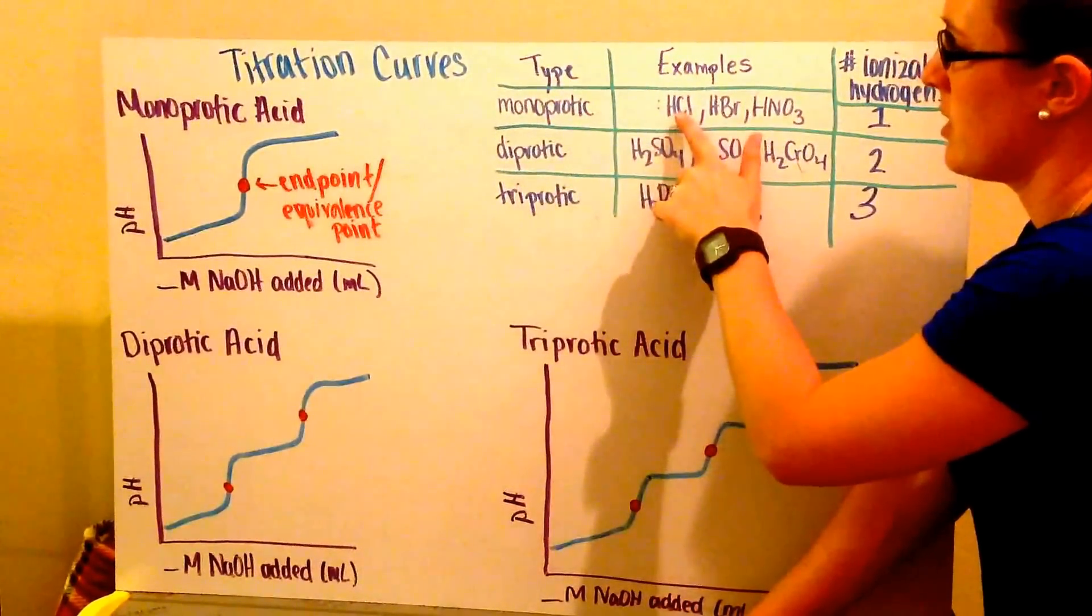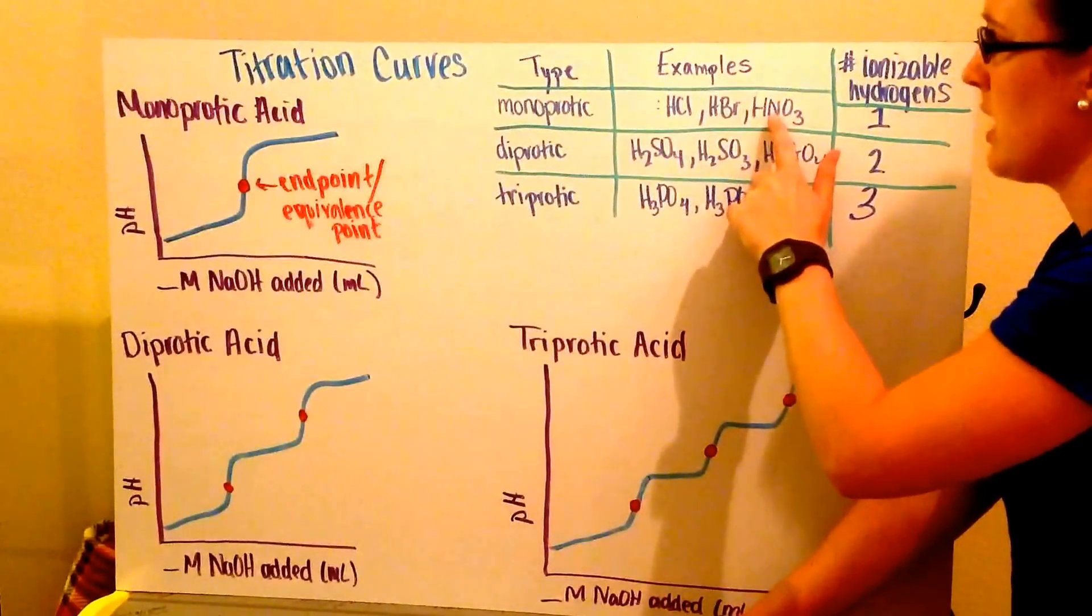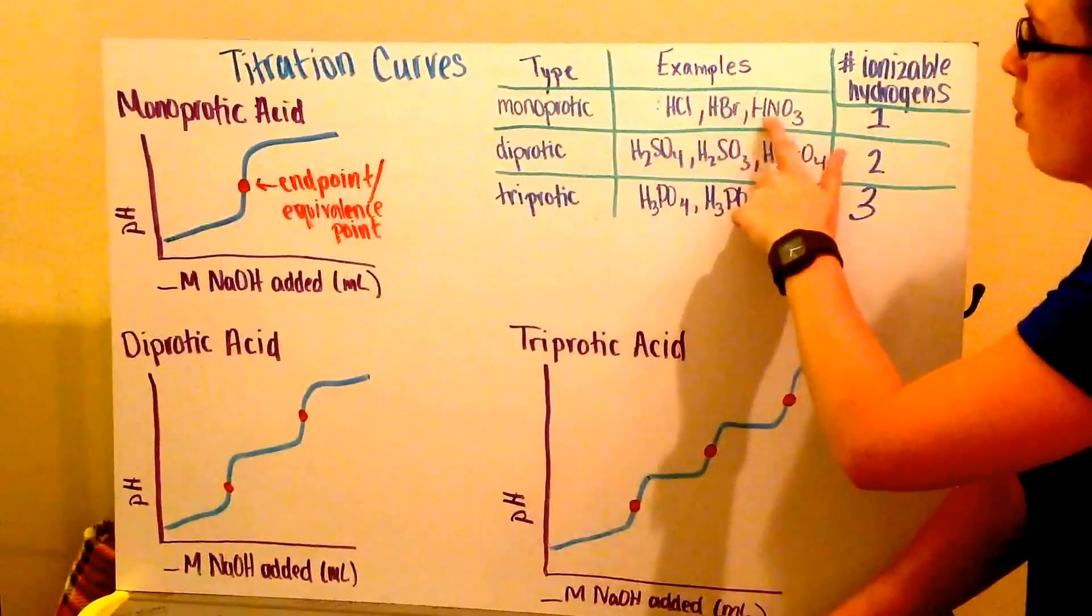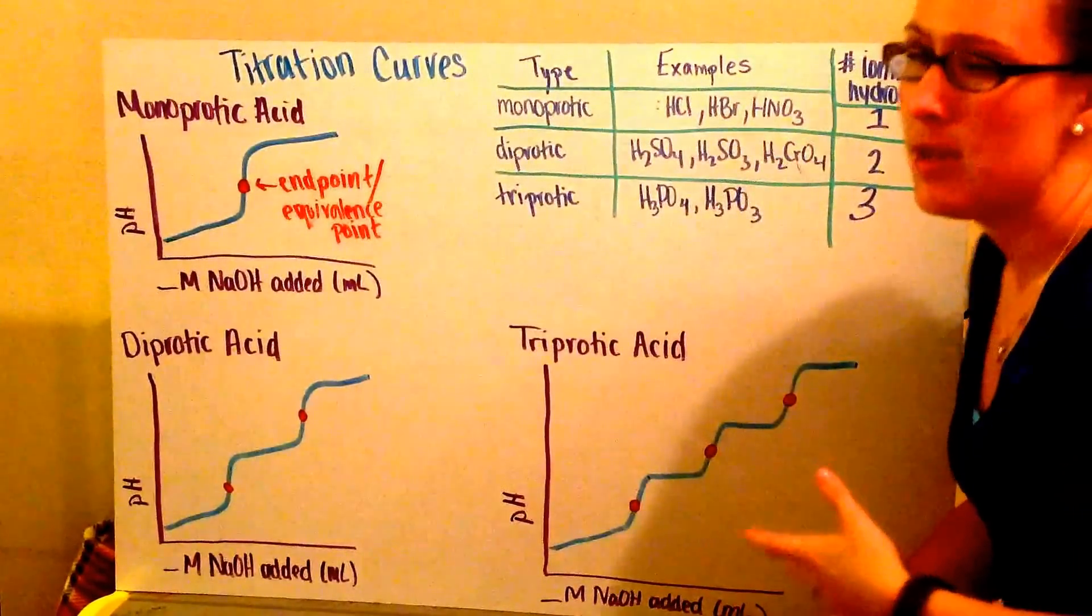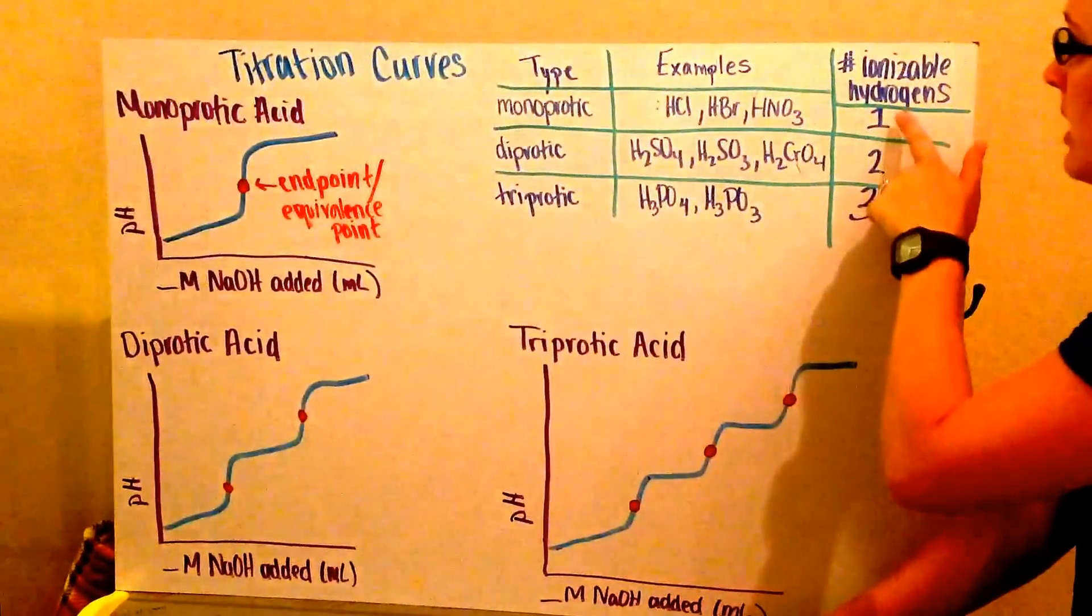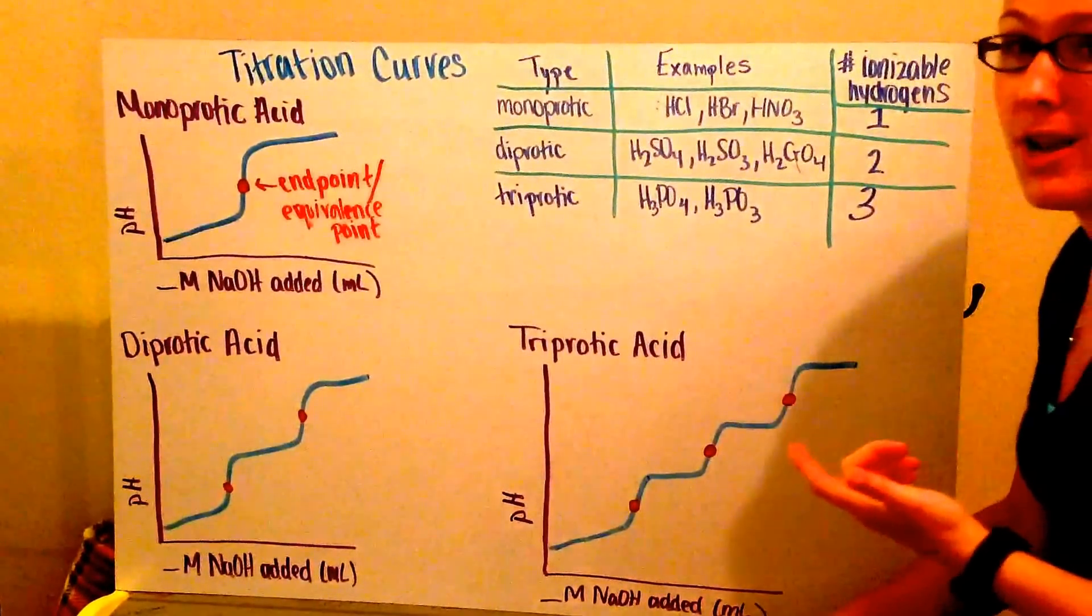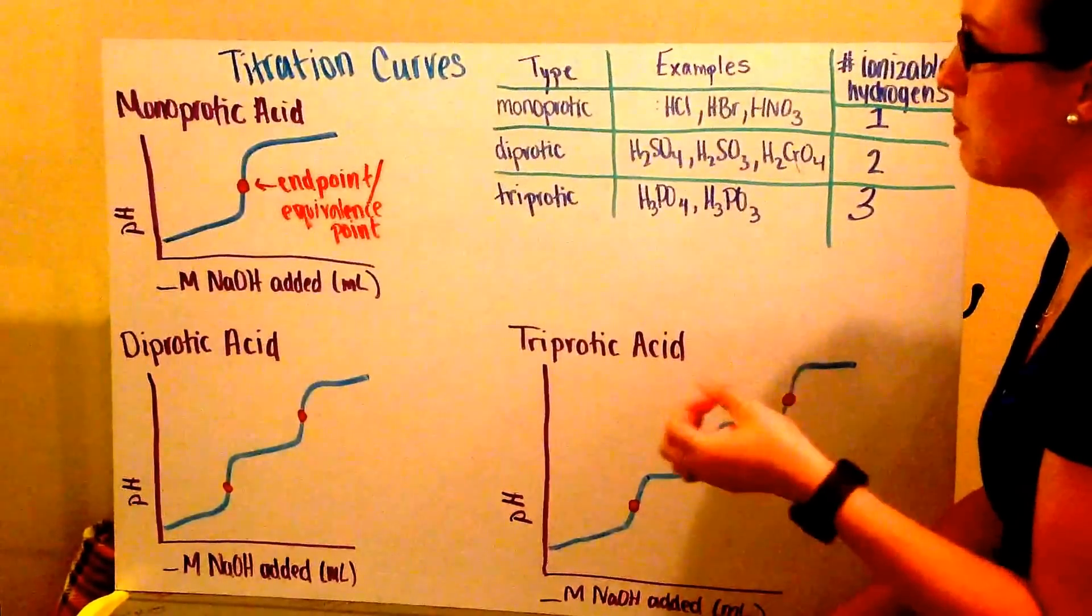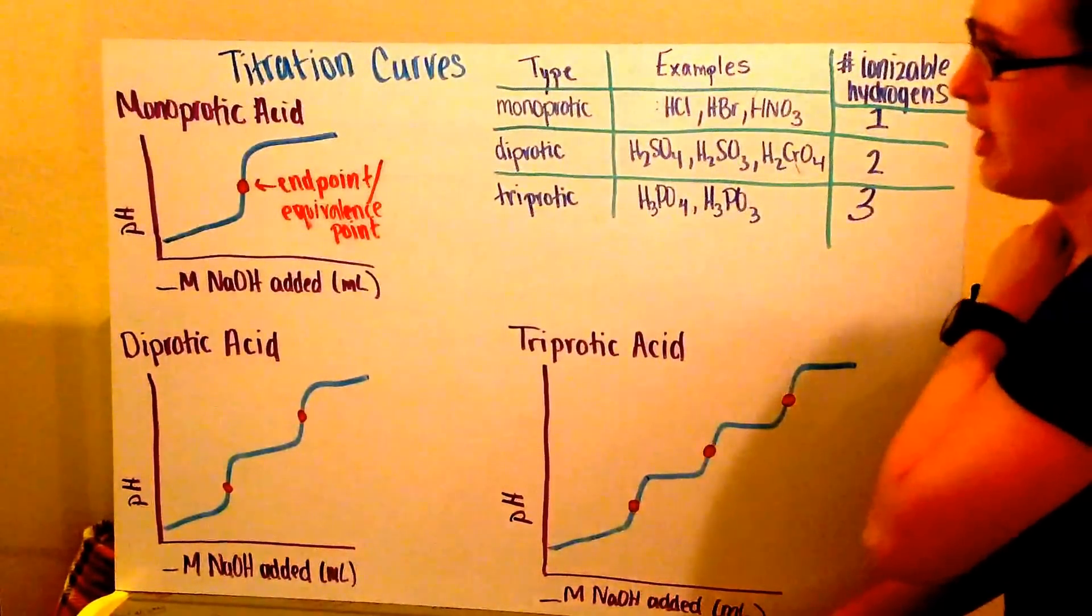Examples are hydrochloric acid, hydrobromic, and nitric acid. All of these just have one hydrogen attached to them. Remember that a hydrogen makes something acidic. These have one hydrogen that's considered ionizable, so when it gets pulled off, we just have the one hydrogen that's pulled off.